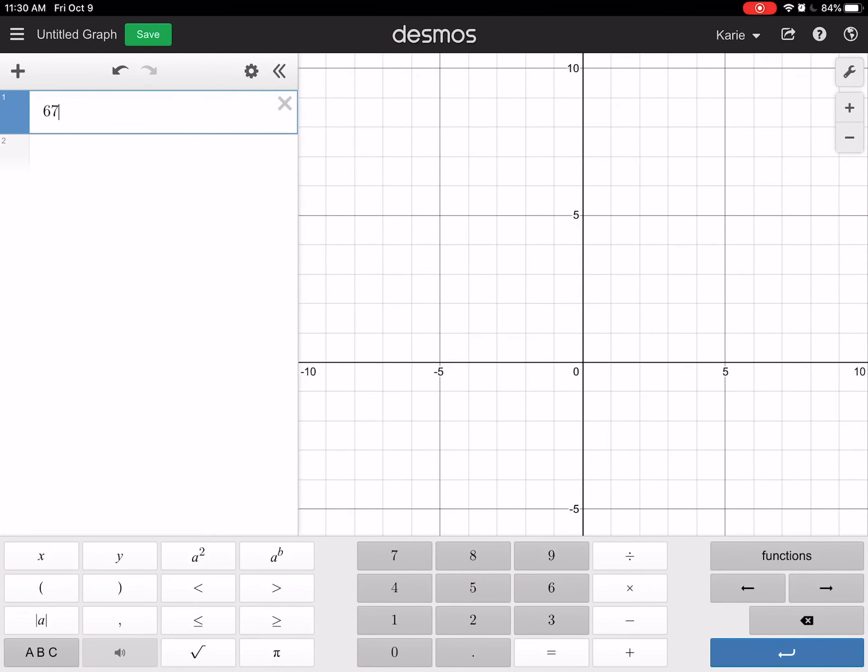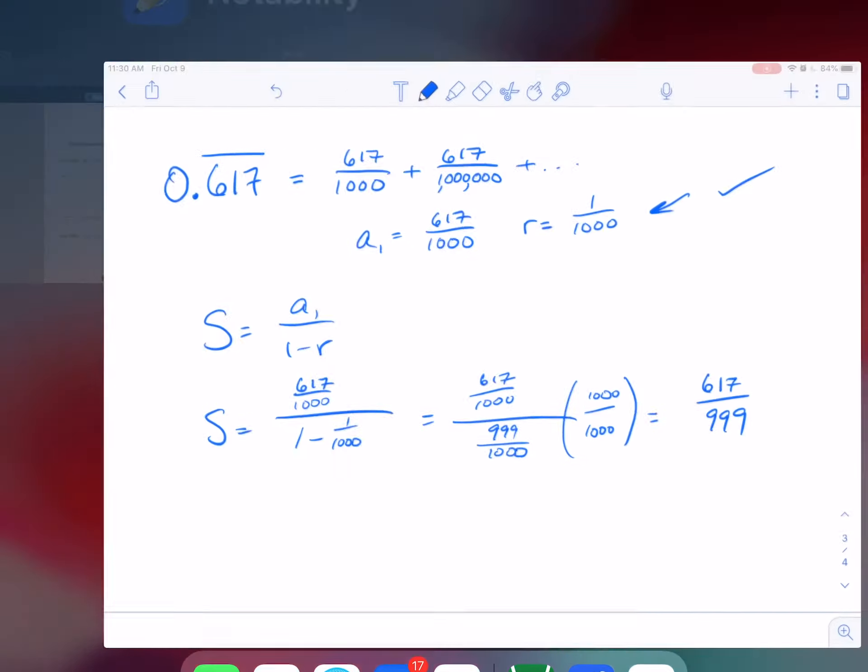Let's see what happens if I go to Desmos. 617 divided by 999. And look, 617, 617, 617, 618 because it's rounding. All right, so that looks good.